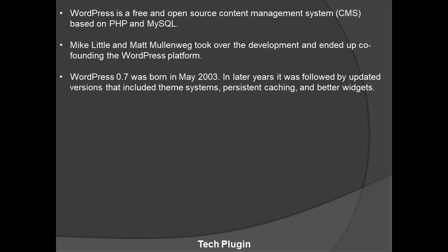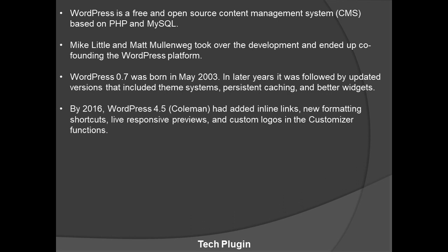Those updates included the theme system, persistent caching, and better widgets. By 2016, WordPress 4.5 'Coleman' was released — the name is in honor of jazz saxophonist Coleman Hawkins. It is available for download or as an update from your WordPress dashboard, and it added inline links, new formatting shortcuts, live responsive previews, and custom logos in the Customizer.